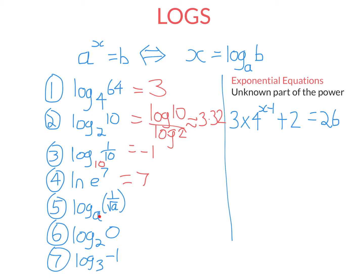For this one, the base is just a. We're saying what power do you raise a to to get 1 on root a? We need to write this as a power of a. It's a to the power of a half because of the square root, and because it's on the bottom, it's a to the negative a half. If you raise a to the power of negative a half, you get 1 on root a. The last two examples are undefined — you can't raise 2 to any power to get 0. Similarly, you can't raise 3 to any power to get minus 1, because if you raise a positive number to any power, the answer's always positive.